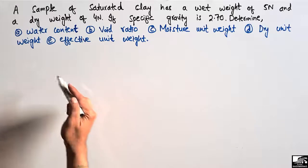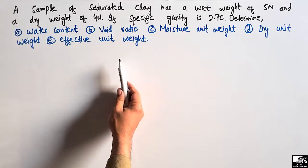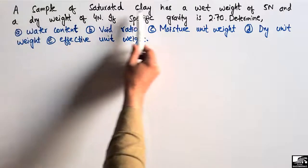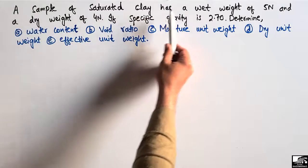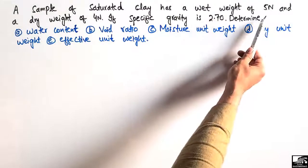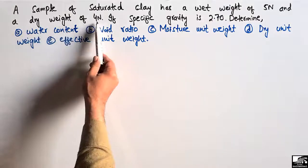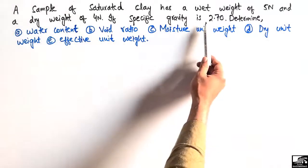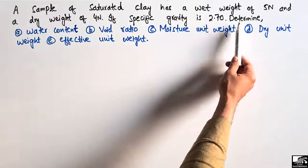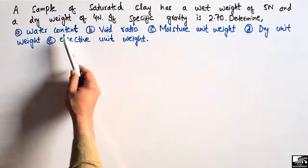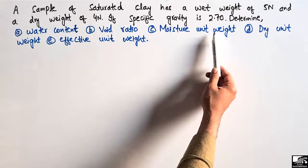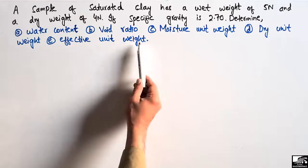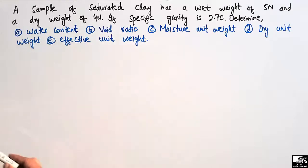The problem states that a sample of saturated clay has a wet weight of 5 Newtons and a dry weight of 4 Newtons. If the specific gravity is 2.70, then determine the water content, void ratio, moisture unit weight, dry unit weight, and effective unit weight for this soil sample.